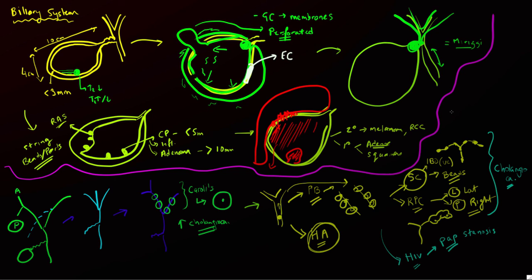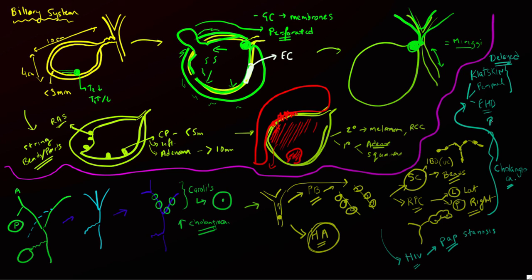Cholangiocarcinoma most commonly occurs at the hilum — known as the Klatskin tumor — but can also occur peripherally or within the extrahepatic biliary tree. Hilar and peripheral tumors characteristically show delayed enhancement, becoming most apparent about 10 minutes after contrast due to desmoplastic reaction and scarring. The mass appears as an ill-defined T2 hyperintense lesion and is almost always associated with upstream biliary ductal dilatation.